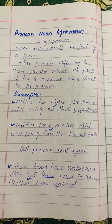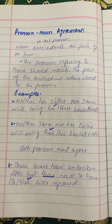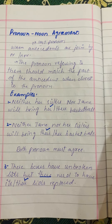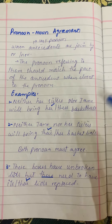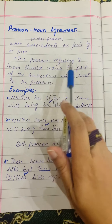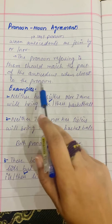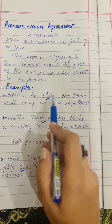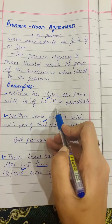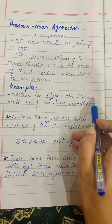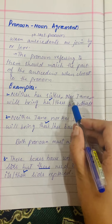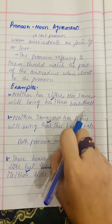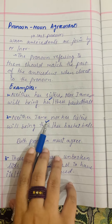Now we will discuss pronoun-noun agreement and pronoun-pronoun agreement. When antecedents are joined by 'or' or 'nor,' the pronoun should match the nearest antecedent — the last noun closest to the pronoun. For example: 'Neither her sisters nor Jane will bring her basketball.' Here 'Jane' is singular and is the last (closest) antecedent, so we use 'her.'